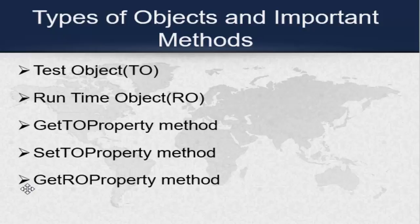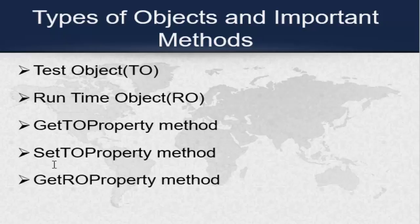Now, these three methods. From the name itself you can guess their usage. Get TO — get the test object property — gets the property from the object repository. Then set the property to the object repository. Get the runtime property. We don't have a set RO property. So we have totally three methods.